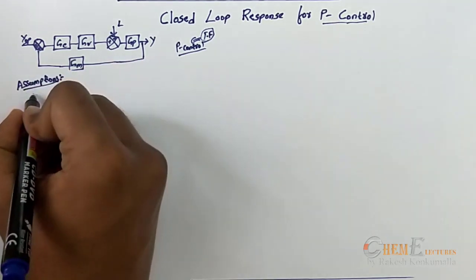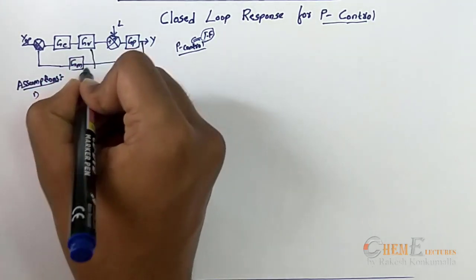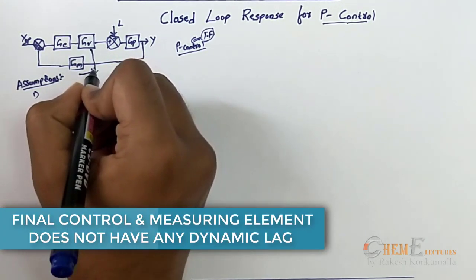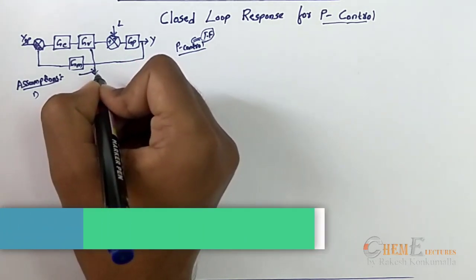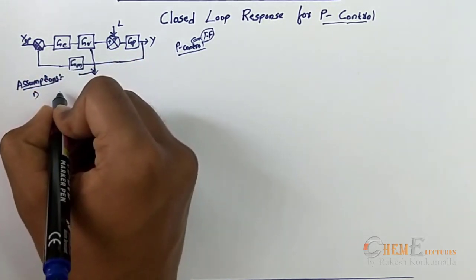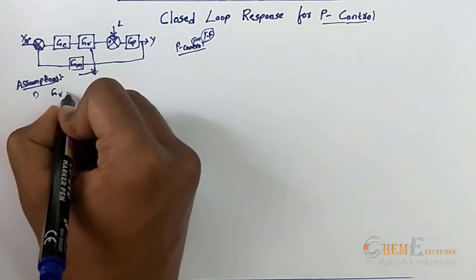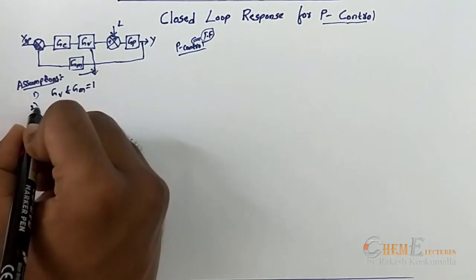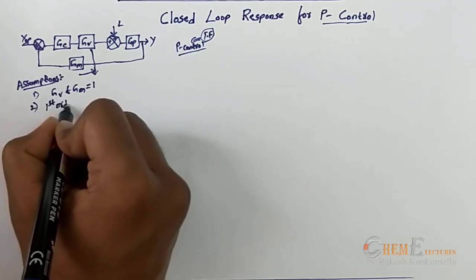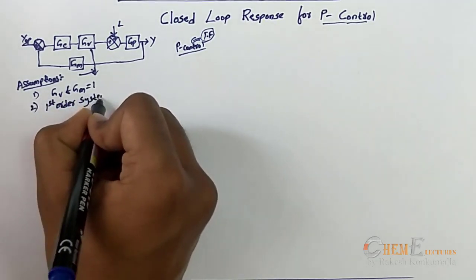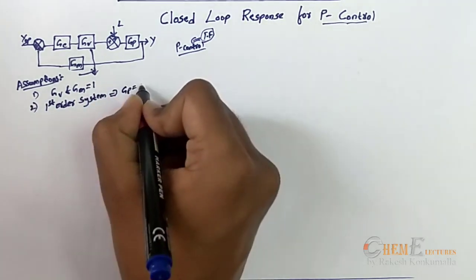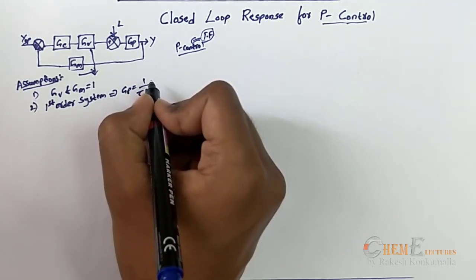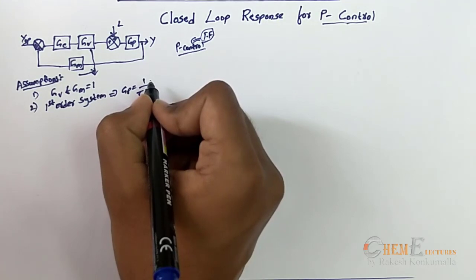I am making some assumptions. First assumption: let the control valve and the measuring element not have any dynamic lag, meaning their transfer functions have a constant value without any time delay. I am taking that constant value as 1, so GV and GM equal 1. Second assumption: I will take a first order system, meaning my process will be 1 by (tau*s + 1), with gain equal to 1, simplifying to avoid complexity in the derivation.